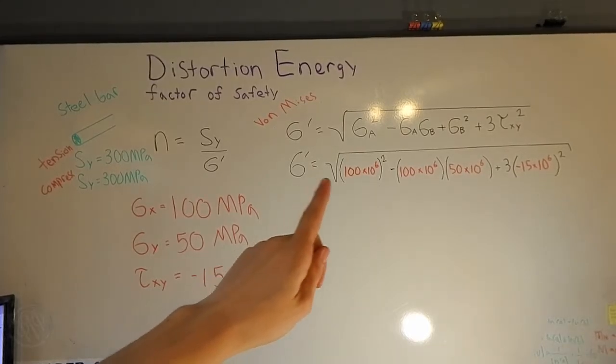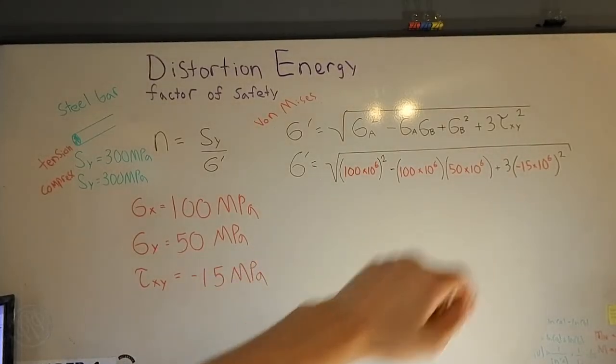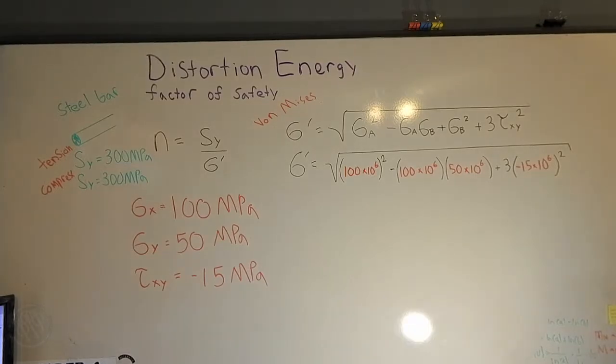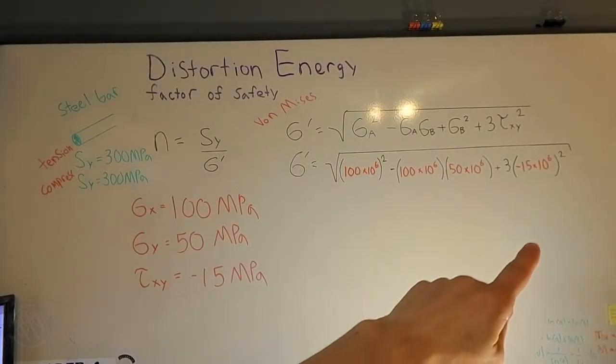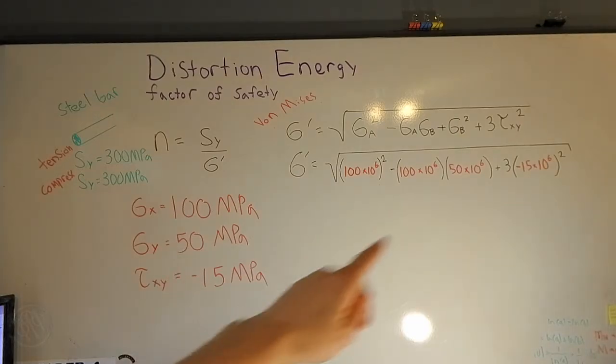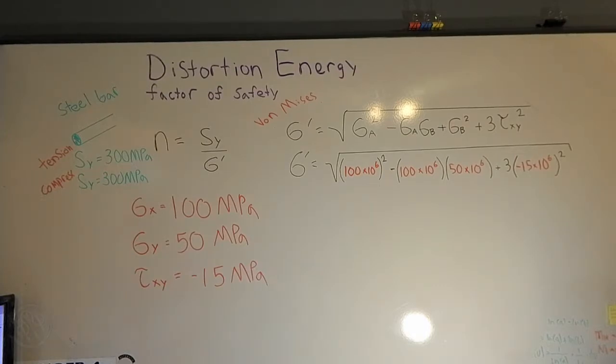Alright, here we can see that I just substituted my plane stresses into that equation and my shear stress as well. And something that's worth noting is that your shear stress is a negative, but when we put it into the equation, it actually doesn't matter. So the direction of the shear stress actually doesn't impact the von Mises stress.